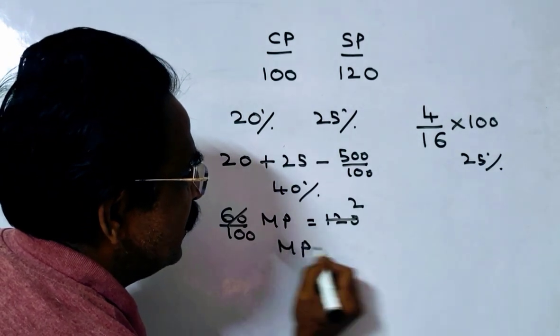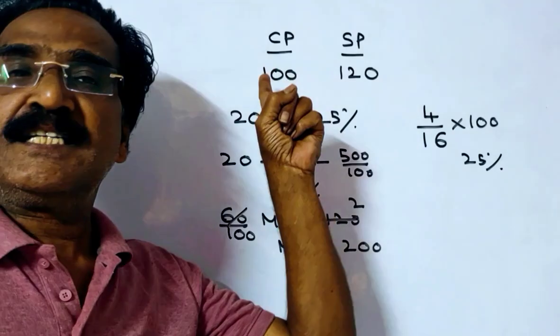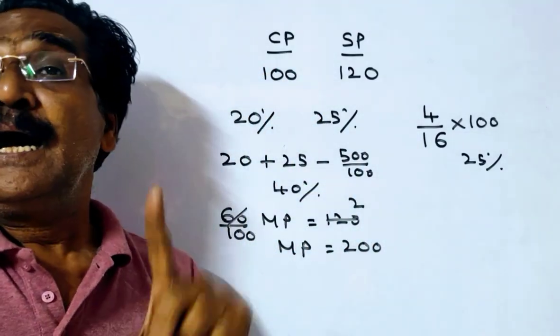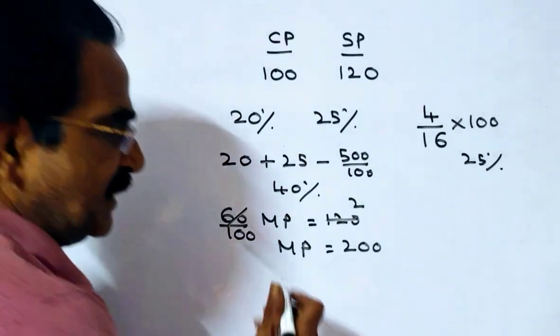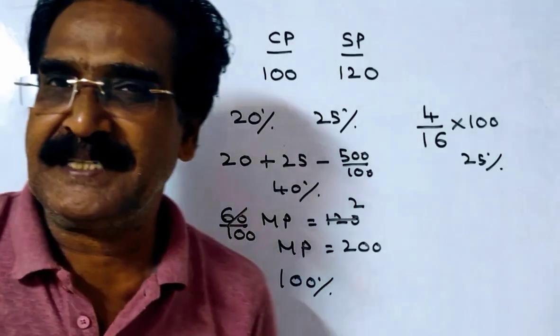So market price is 200. Marked price is 200. Cost price is 100, marked price is 200. So he must mark the goods 100% above the cost price. Your answer is 100% above the cost price.